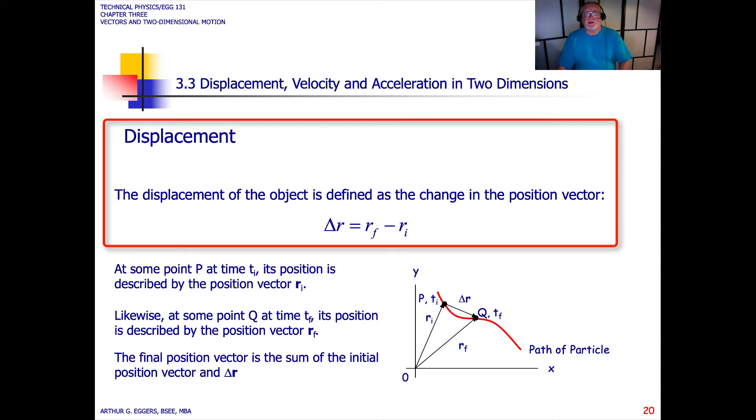Now we look at displacement in a polar coordinate system. Displacement, as we've seen before, is not the same as distance. In this case, we have displacement of an object defined as the change in the position vector. You'll notice the definition has changed a little bit. Instead of being x sub f minus x sub i, it is now a change in the radius: the radius of the final minus the radius of the initial.